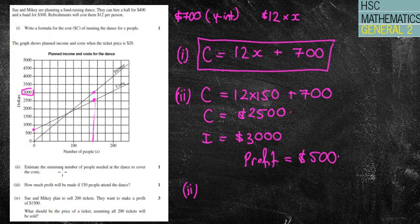Alright. So question 2 says estimate the minimum number of people needed to cover the costs. Well that would be your break even point which would be well it's between 20, 40, 60, 80. So that's 80. So that's 90 people. Remember that's your break even point.